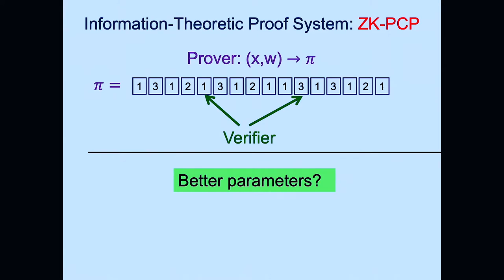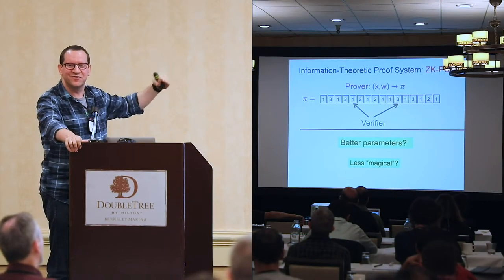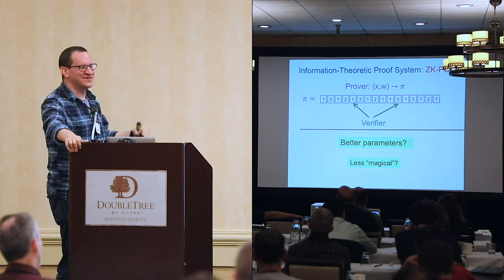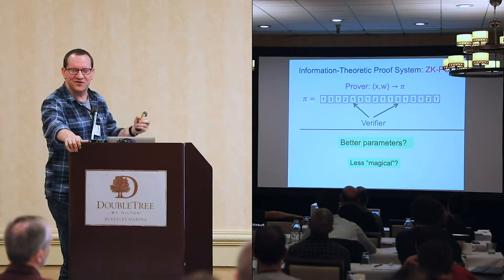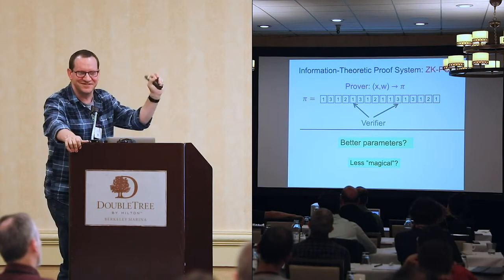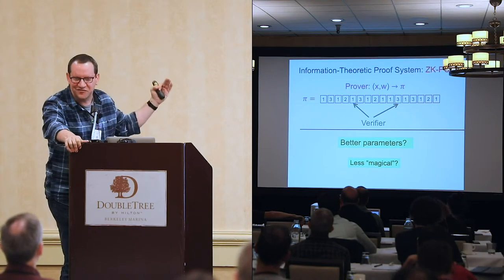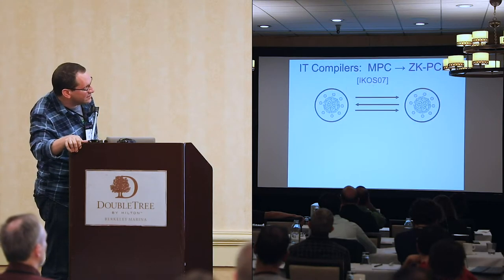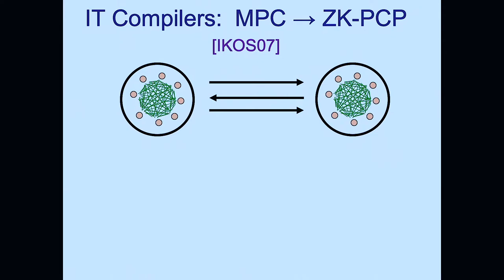Can we improve the parameters of the recolorability-based construction? Can we do something that doesn't rely on the miracle of having an NP-complete language with this convenient structure? This leads to the first example of an information-theoretic compiler that takes simple MPC protocols and converts them into zero-knowledge PCPs.